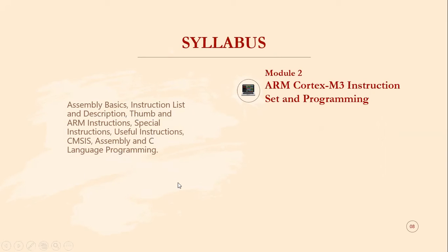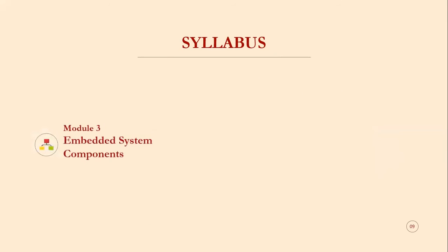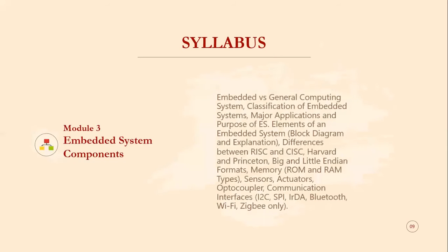Module 3 covers embedded system components. Topics include a comparison of embedded systems versus general-purpose computing systems, classification of embedded systems, major applications, elements of a typical embedded system with a block diagram, differences between RISC and CISC architectures, Harvard and Princeton architectures, big and little endian formats, memory types (ROM and RAM), sensors, actuators, optocouplers, and communication interfaces such as I2C, SPI, IrDA, Bluetooth, Wi-Fi, and Zigbee.